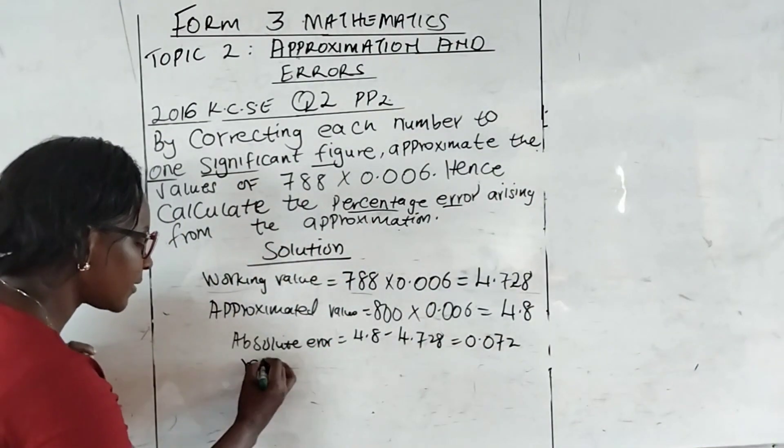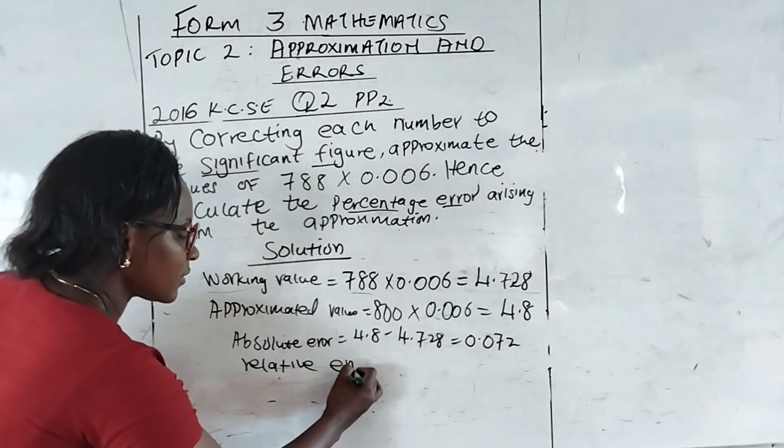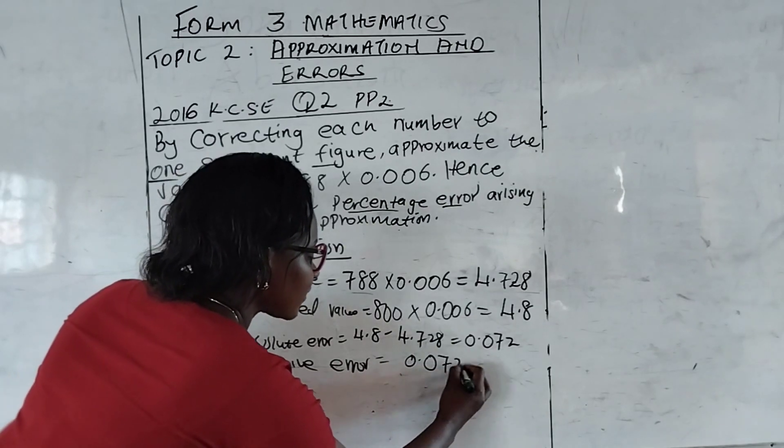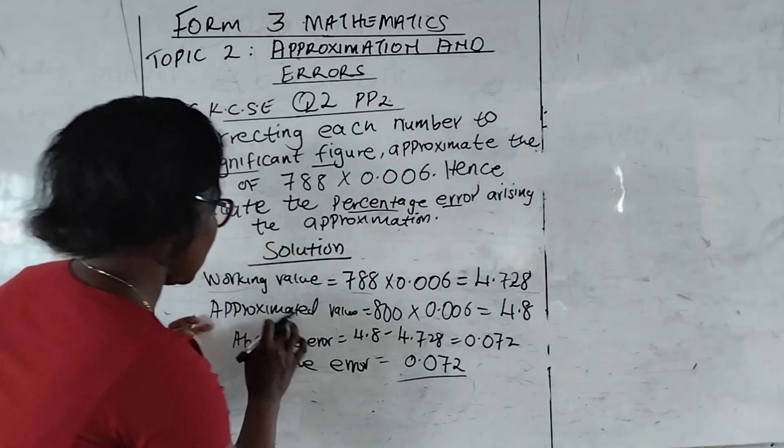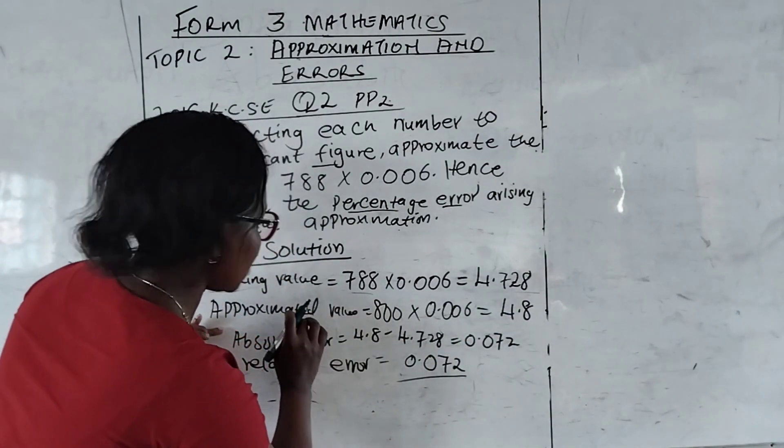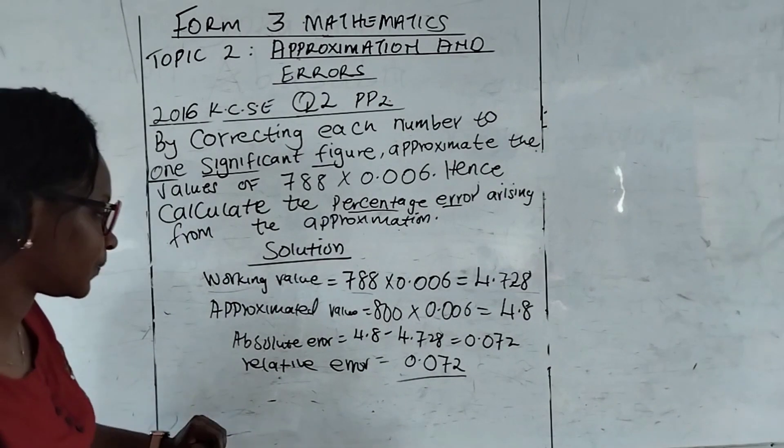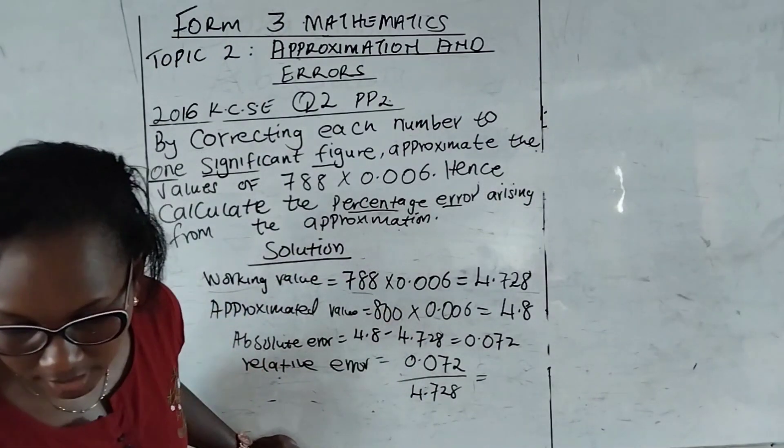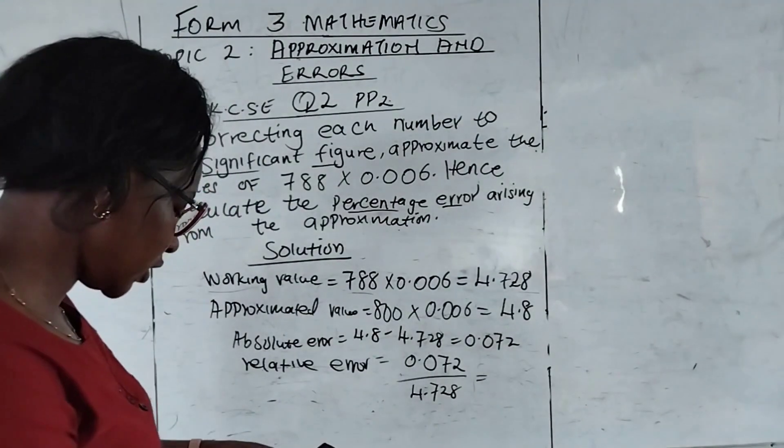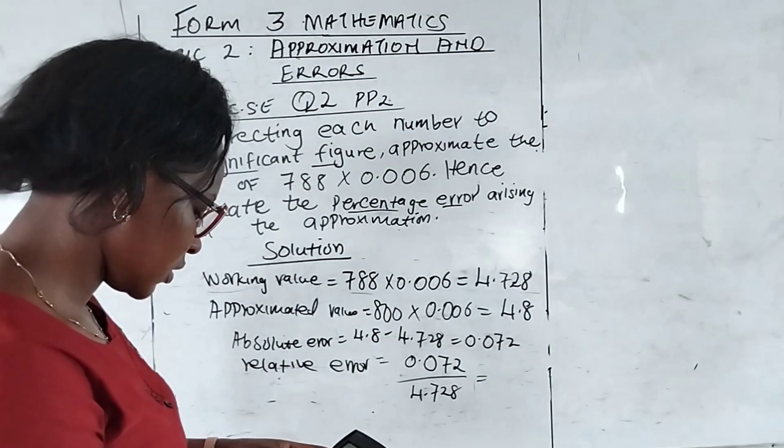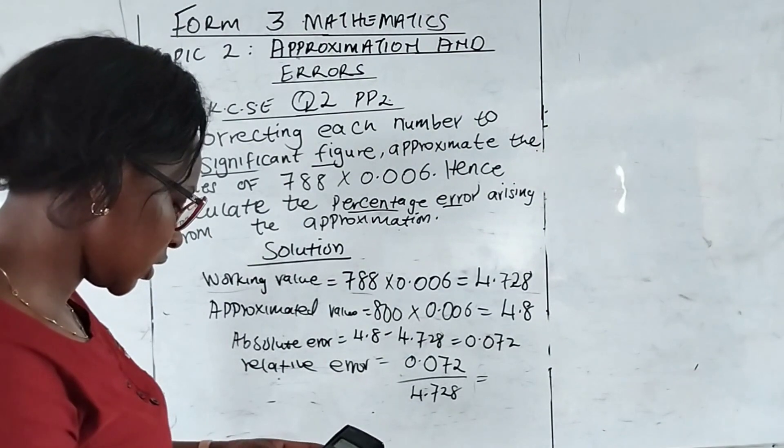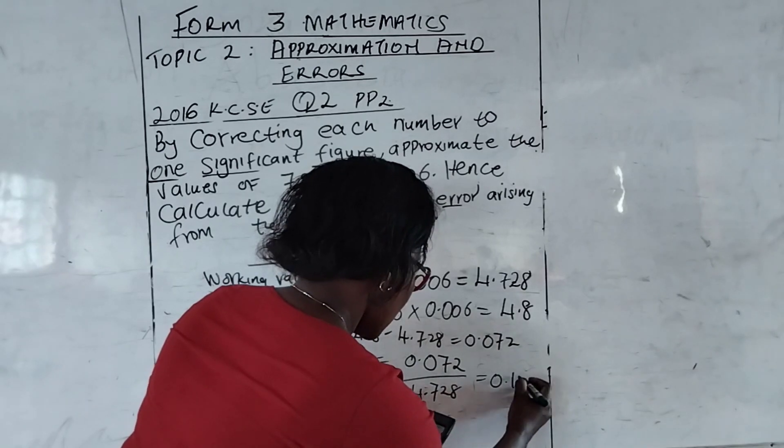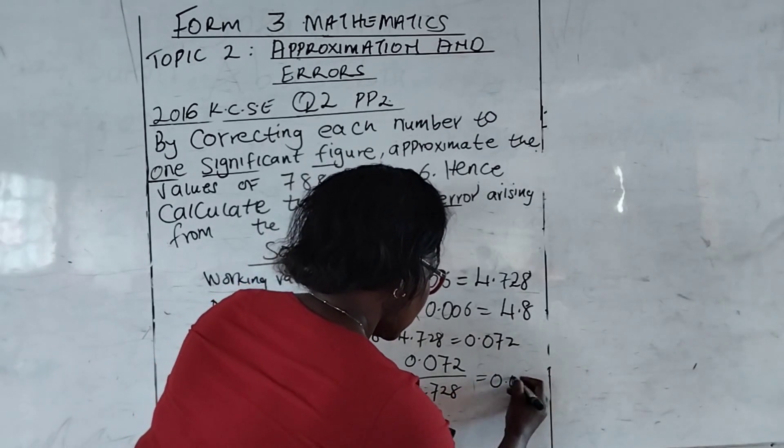Then our relative error is going to be our absolute divided by actual. And that is 0.072 divided by our actual, which is 4.728. And our answer is going to be 0.0152284.